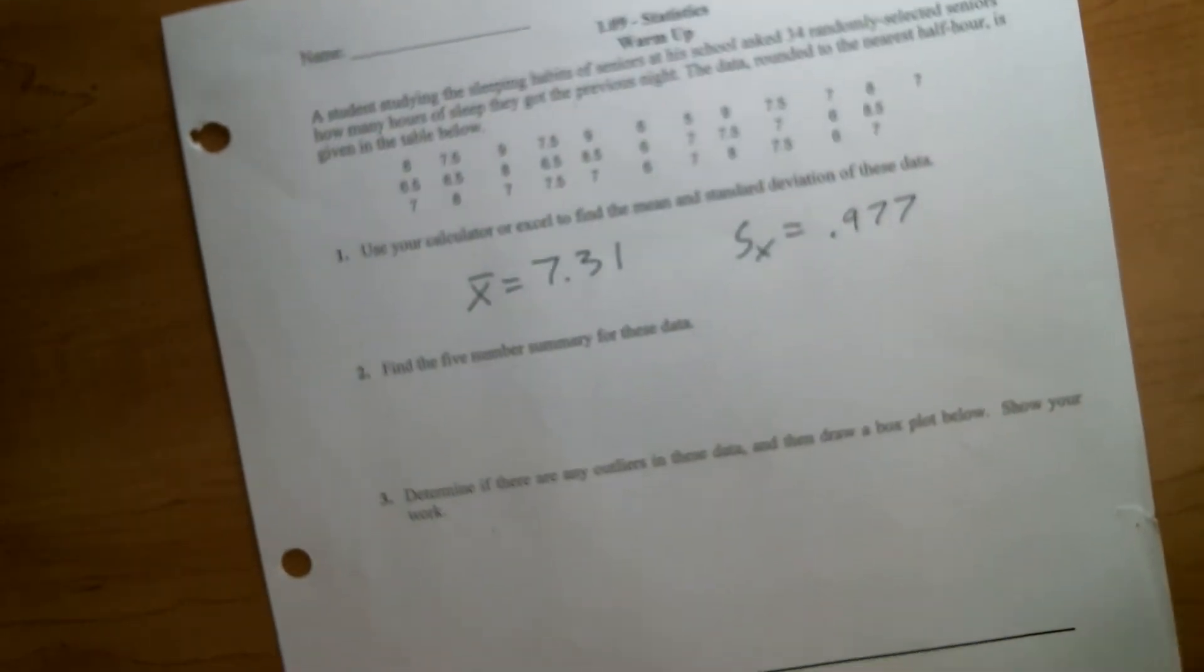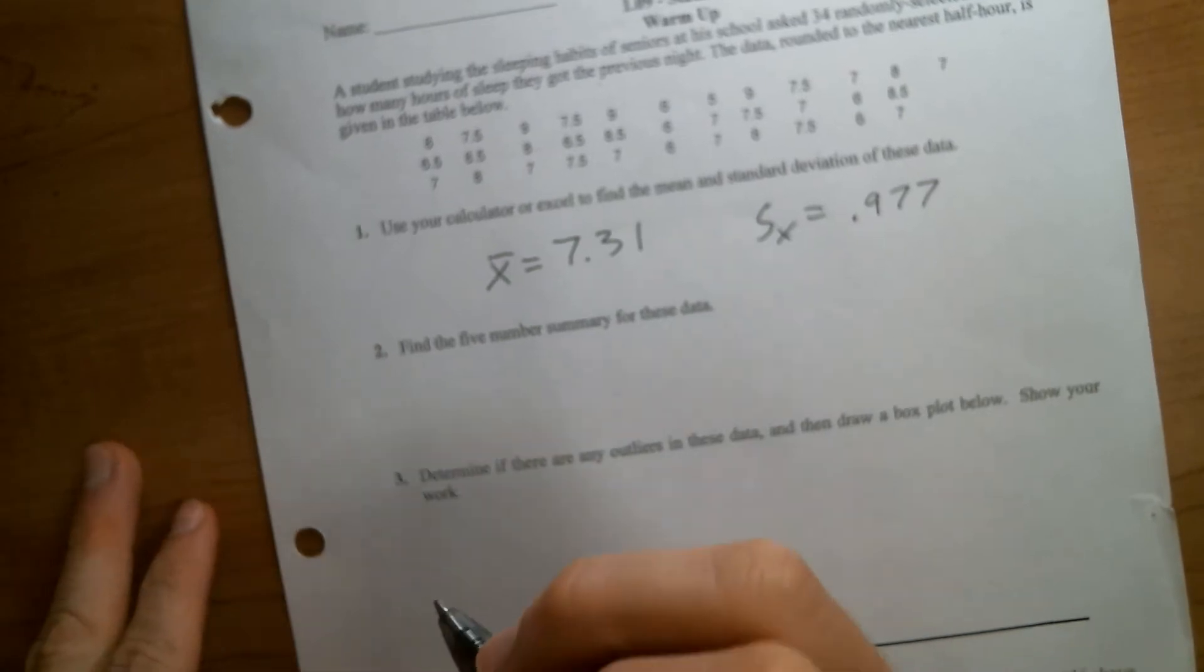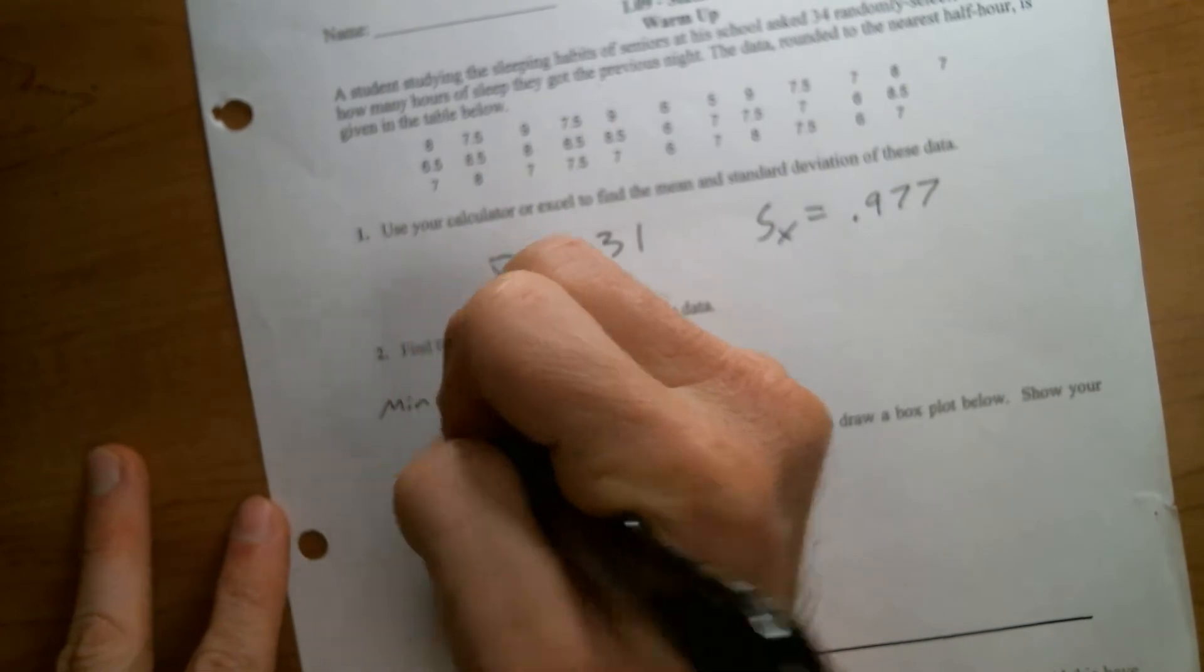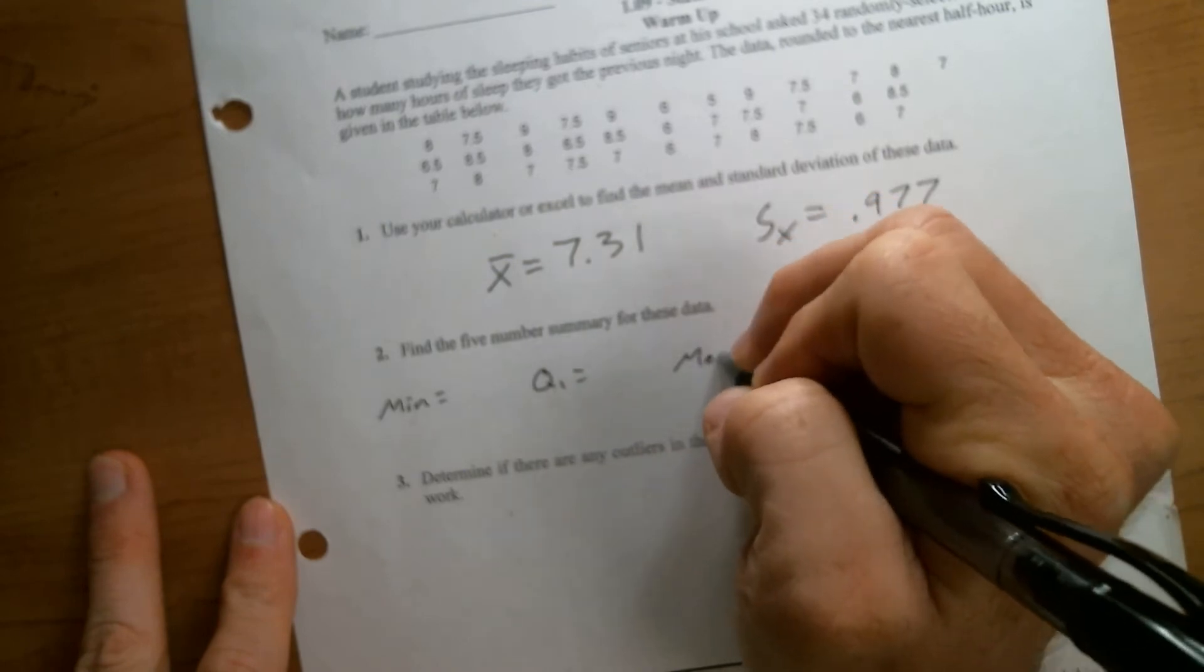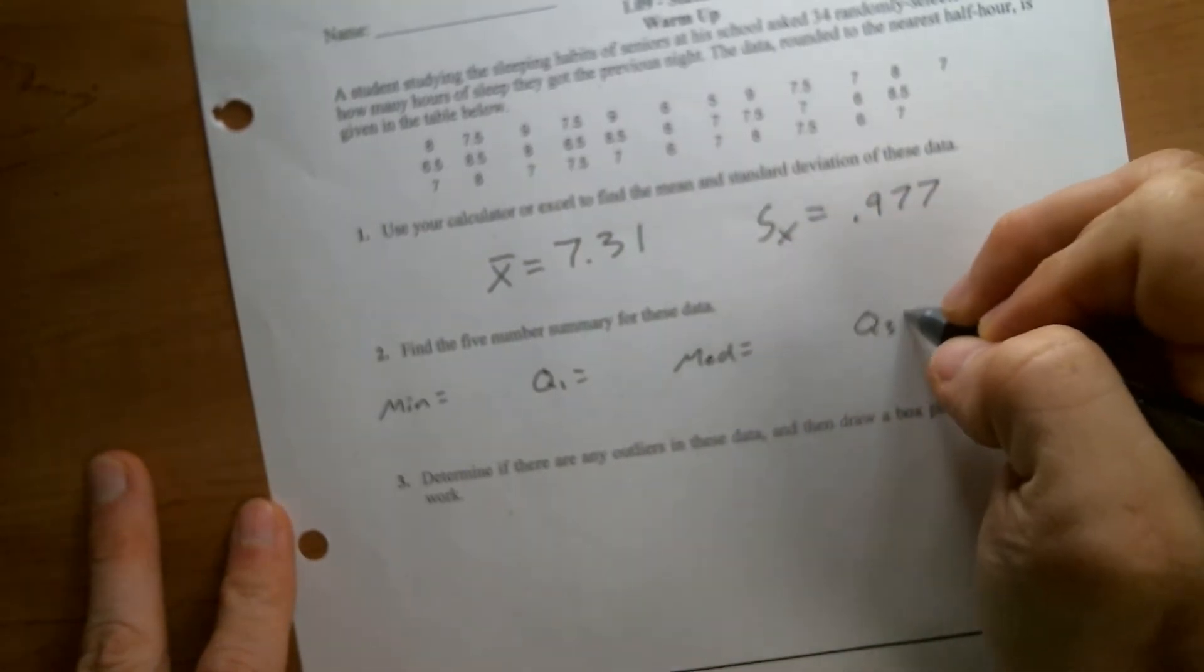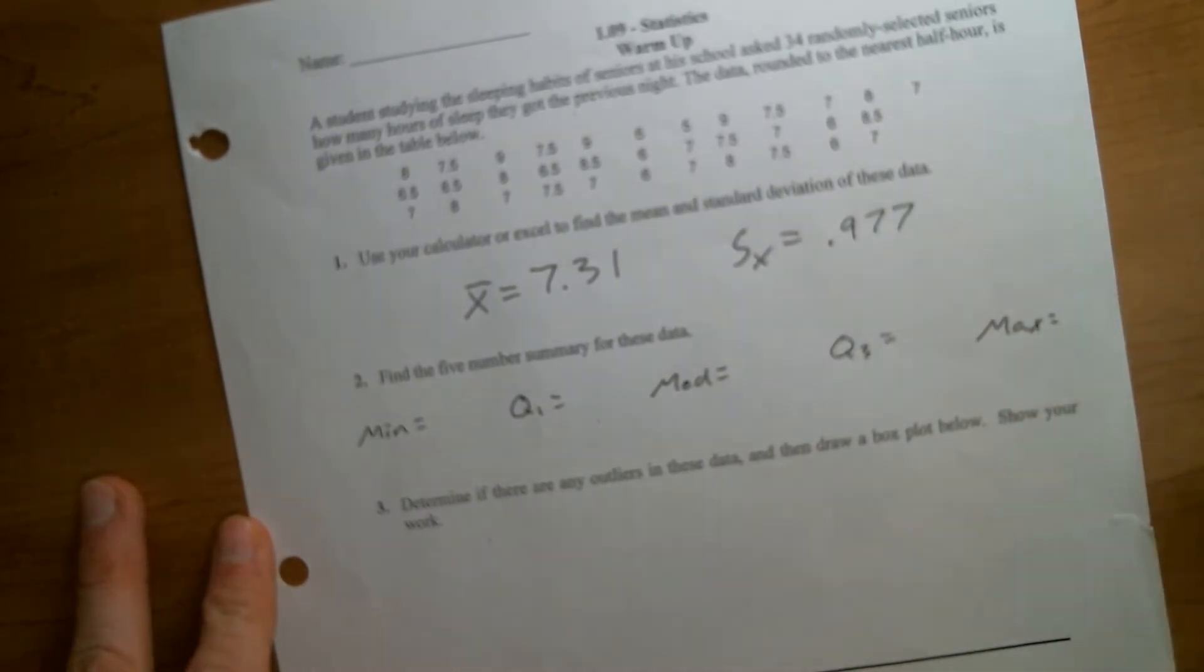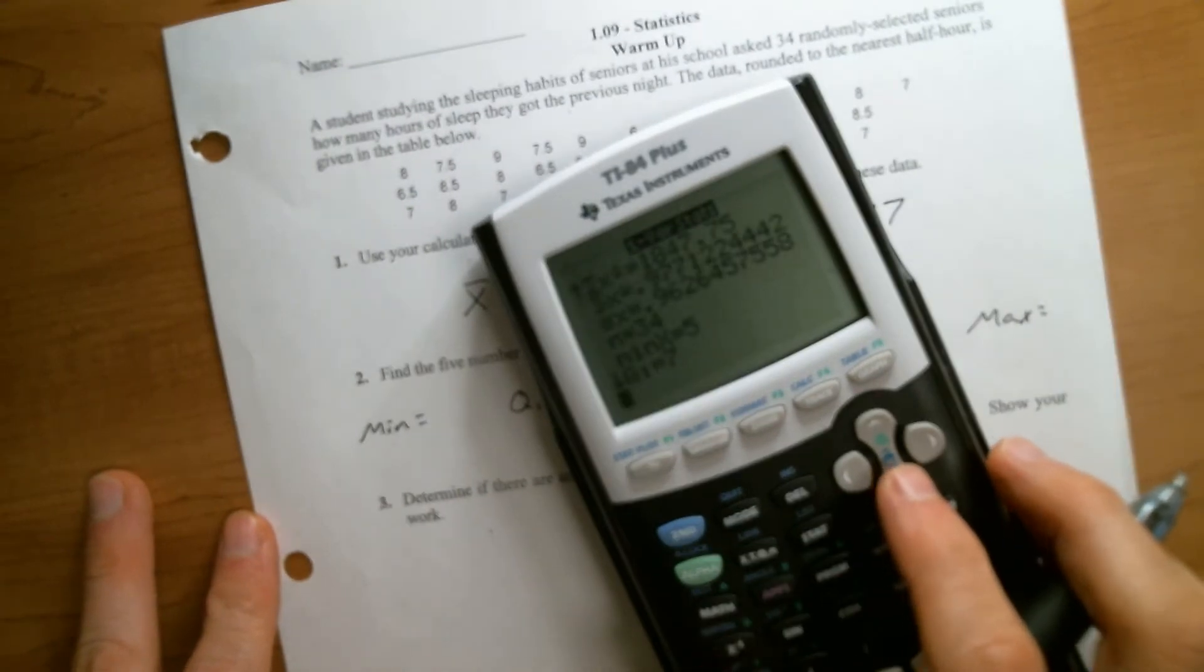Question two says, find the five number summary. So really, this is just making sure you know what the five number summary is. So it is your min, your quartile one, your median, which could also be called quartile two, quartile three, and your maximum. And luckily, those are all right here in that same report.